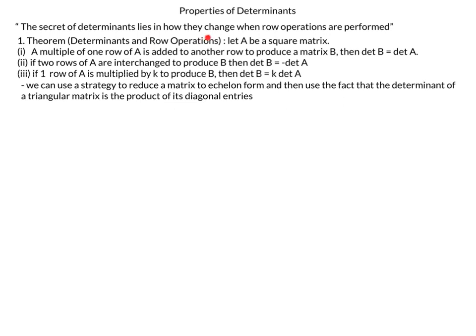Our first theorem is about how row operations affect determinants for a square matrix. If we add a multiple of one row to another row to produce matrix B, the determinant is unchanged. If we interchange two rows, the determinant changes by a negative sign. If we multiply a row by scalar k, the determinant of B equals k times the determinant of A. The strategy is to reduce the matrix to echelon form, track how the determinant changes, and then use the fact that the determinant of a triangular matrix is the product of its diagonal entries.